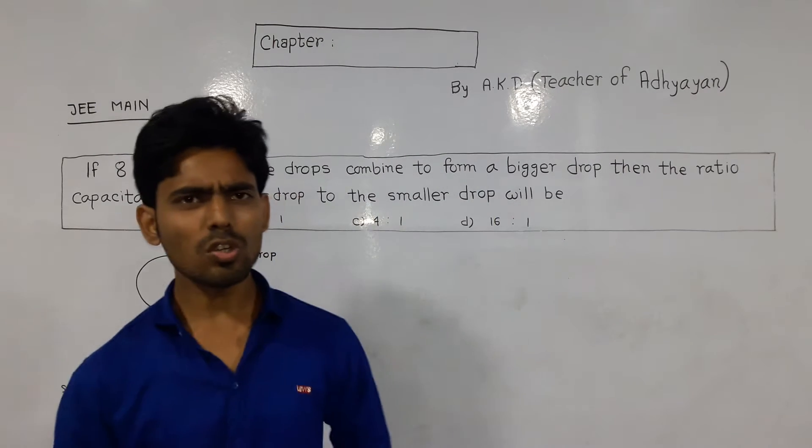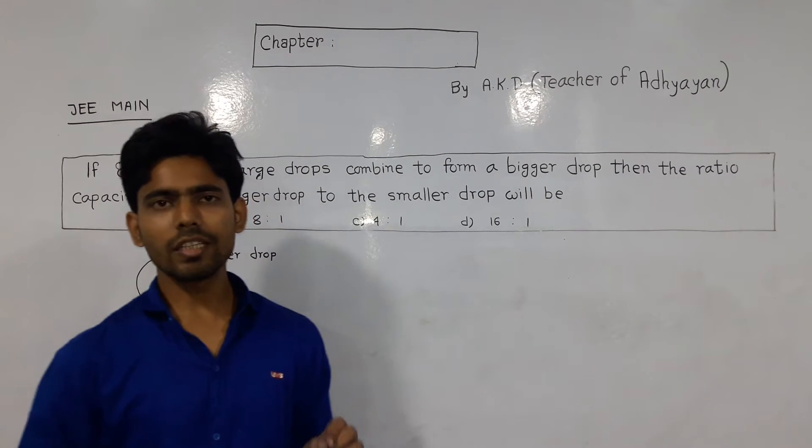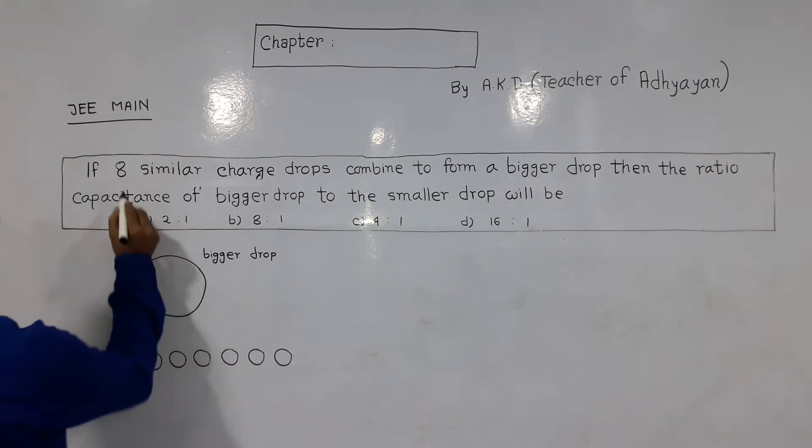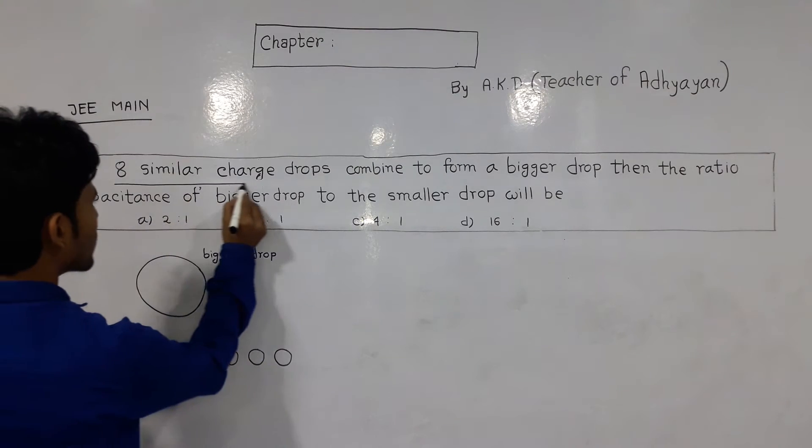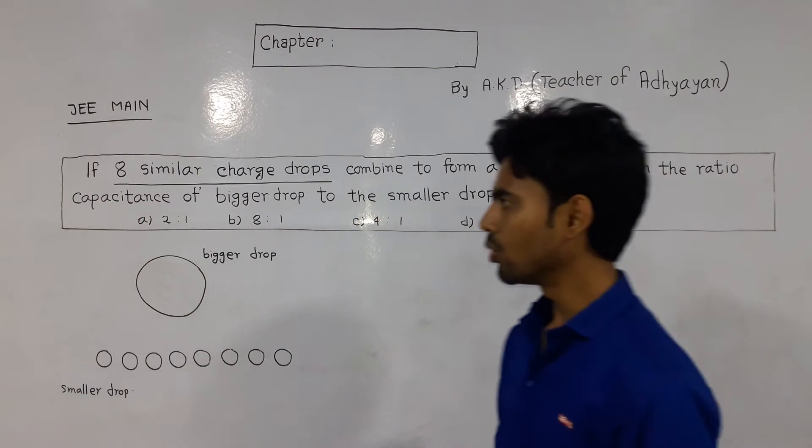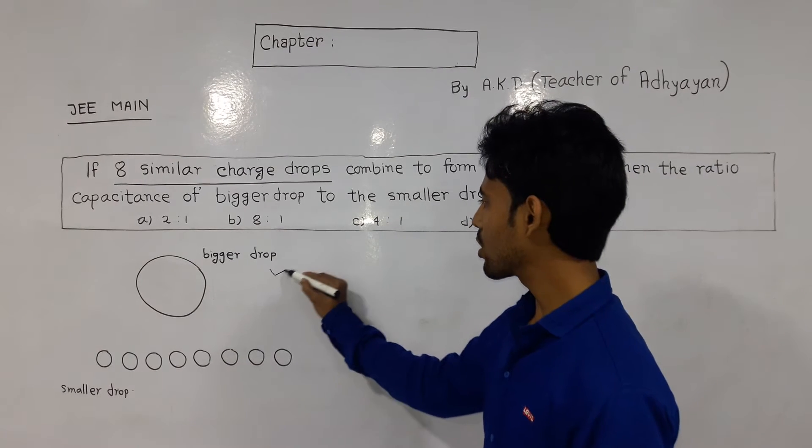To solve this problem, we need to understand that if 8 similar charge drops combine to form a bigger drop, we get one larger drop from the smaller drops.